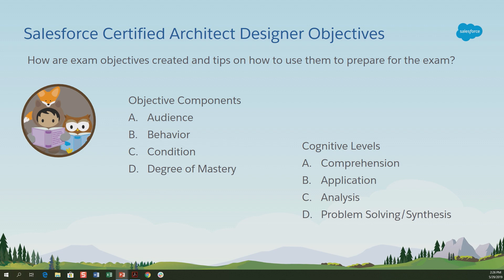Now the cognitive levels. The cognitive levels are the things that we think of inside our head: comprehension, application, analysis, problem solving — also called synthesis in some cases. Comprehension is easiest and problem solving is the most difficult. So if you see an exam objective that requires you to do something in the area of problem solving, you can consider that those are going to be difficult questions that you find on the exam.